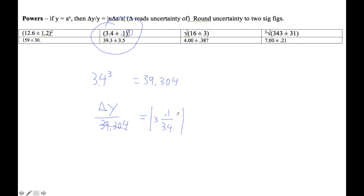Now we'll do the same thing we always do. Put 39.304 here. So that's times 3 times 0.1 divided by 3.4. And I'm getting 3.468.